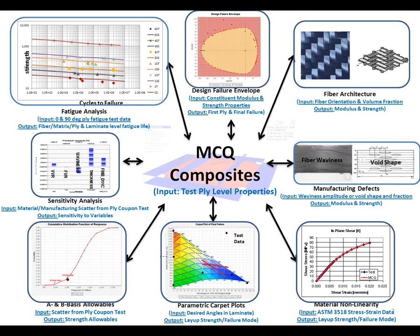On the left middle, you see sensitivity analysis that comes as a byproduct of A and B basis allowables. In the upper left corner, you see snapshots for fatigue analysis where test and simulation results are compared. It also shows you input and output, which you can pause and read. I will show you through the demo case.